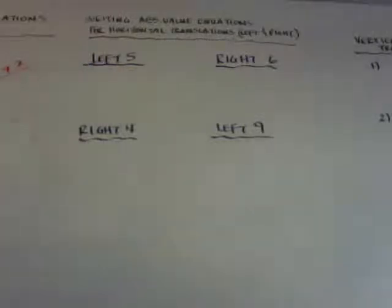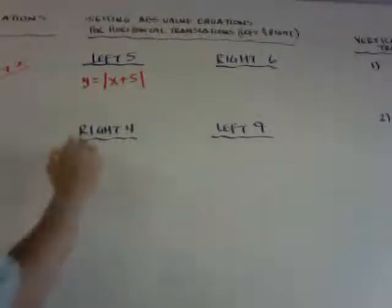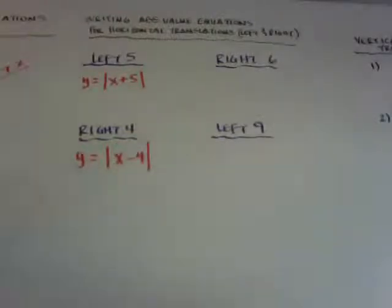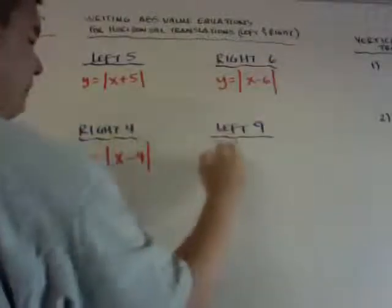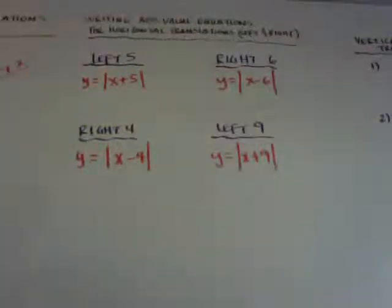So here's a couple of writing equations now. You can see I'm writing absolute value equations if I'm going left and right. If I go left 5, I go y equals absolute value of x and then left 5, I would think would go negative 5 this way, but it's actually opposite. Right 4 would be x minus 4 because opposite. Right 6, if you think about it, it would be x minus 6. And then left 9 would be x plus 9.